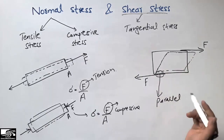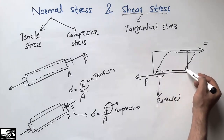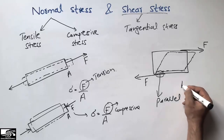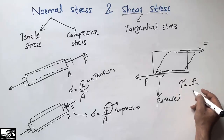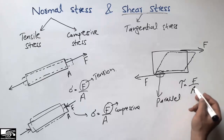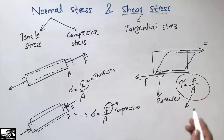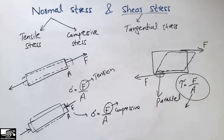The body slides from its original position. Shear stress is usually represented by tau (τ), and its formula is similar to normal stress — force divided by area — but here the area is the area parallel to the force, not perpendicular to it.